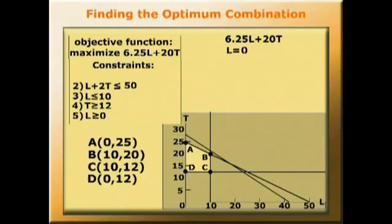So if L is equal to 0 and T is equal to 25, then we have 6.25 times 0 plus 20 times 25 equals 500. So that's the amount of profit if he only produces tomatoes, doesn't go into the production of lettuce.